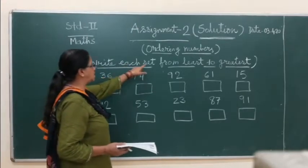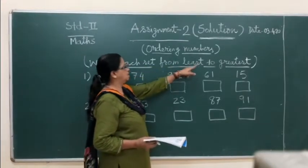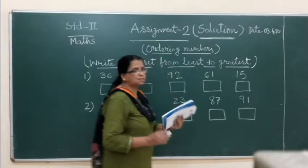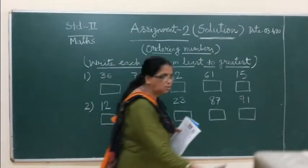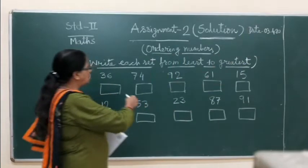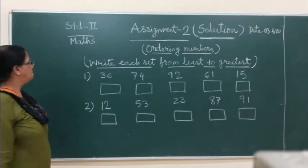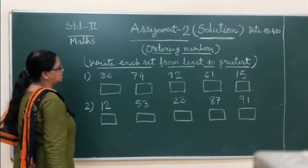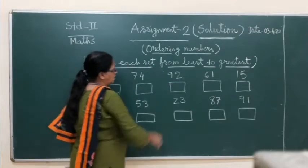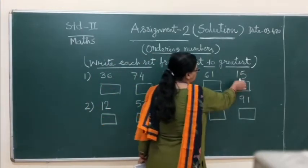Write each square from least to greatest. This means smallest to greatest. So in the number you will see first line: 36, 74, 90, 61, 50.